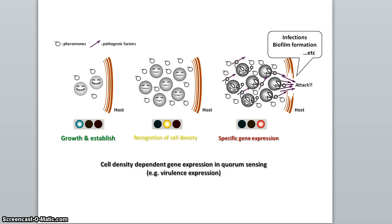If there are very few prokaryotic cells there will be very few pheromones. As these prokaryotic cells divide, they produce more pheromones. Whenever bacteria sense enough pheromones from other cells surrounding them, this signals certain genes to be expressed — such as pathogenic factors or biofilm formation. In the case of pathogenic factors, when there are enough pheromones, the bacteria will produce the pathogenic factors and attack the host. This helps cells make density-dependent decisions about gene expression.